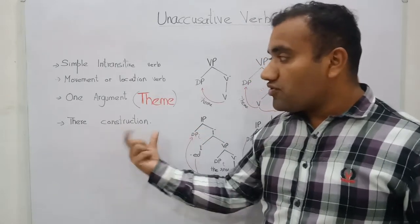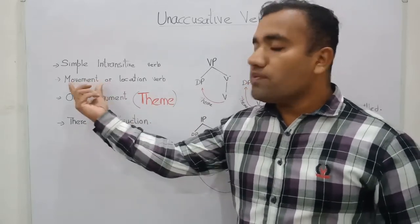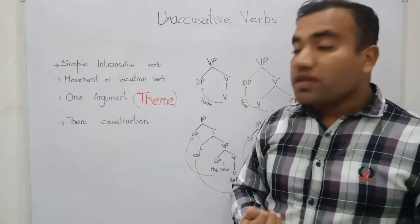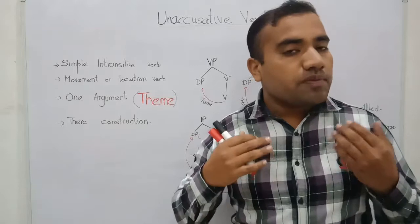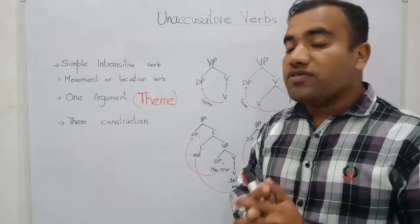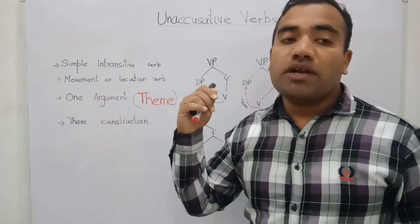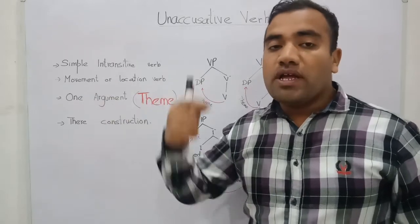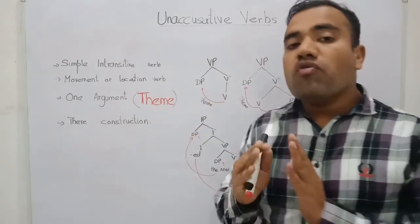These verbs have certain options. They can be used in the there-construction, and more commonly these verbs occur as movement verbs and locative verbs. These are the properties of the unaccusative verb, but the crucial property is that it has the theme role. Because it has one argument, we must assign that argument a role, and that role is the theme role.